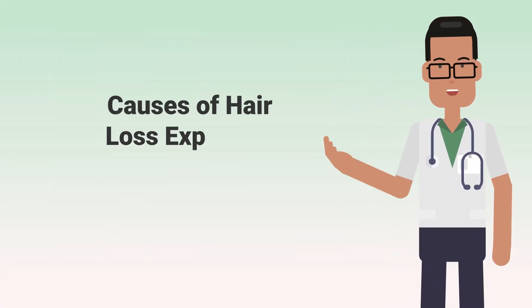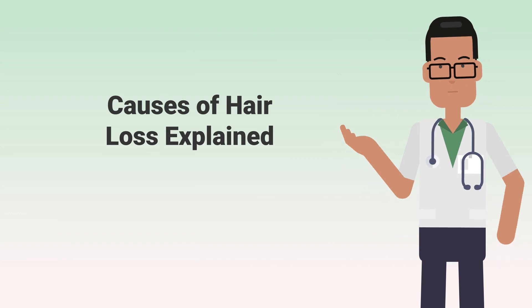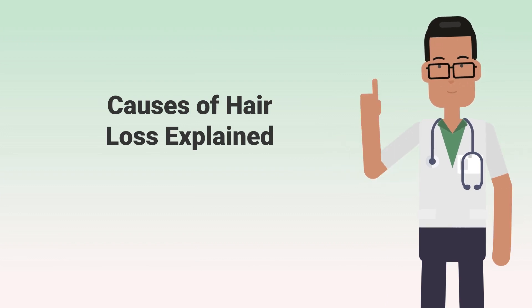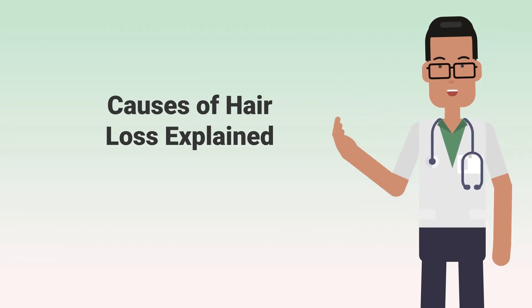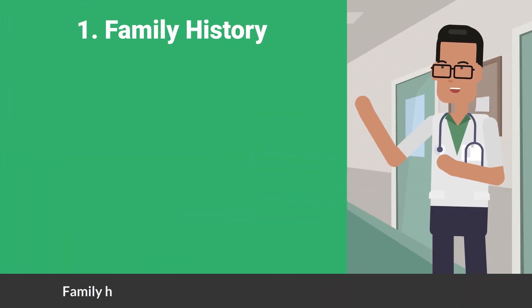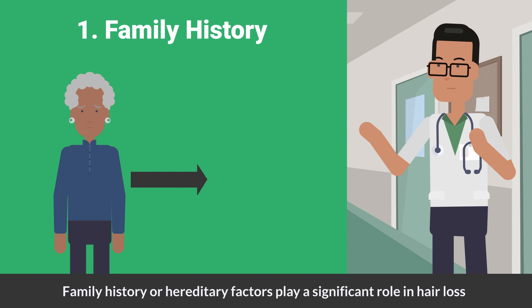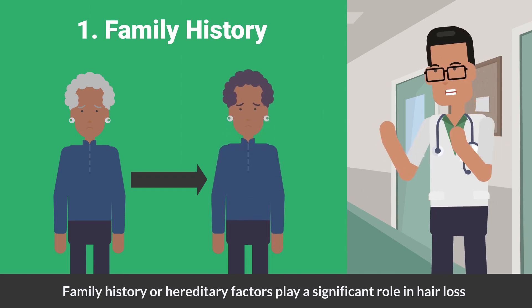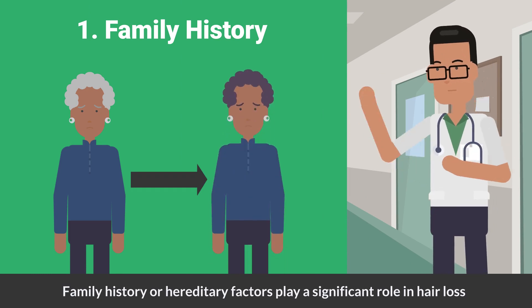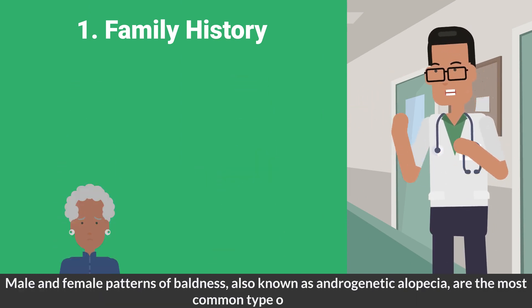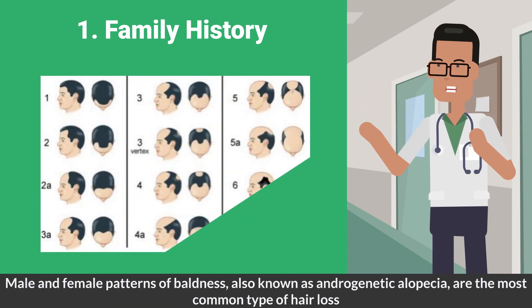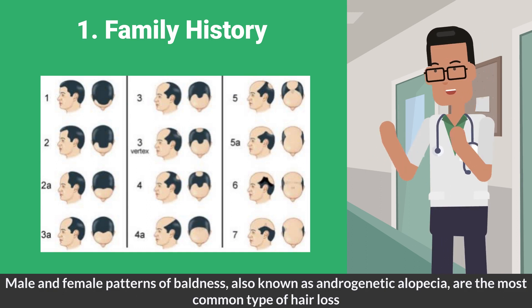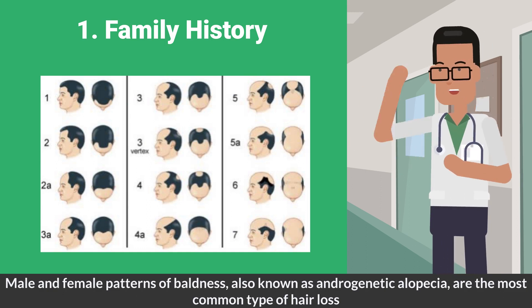Are you troubled by hair loss? Let's dive into the common causes behind it and understand when it might be more than just the usual shedding. Family history and hereditary factors play a significant role in hair loss. Male and female patterns of baldness, also known as androgenetic alopecia, are the most common type of hair loss.